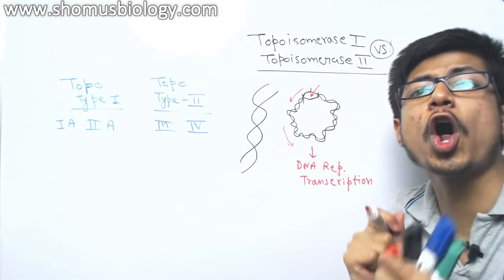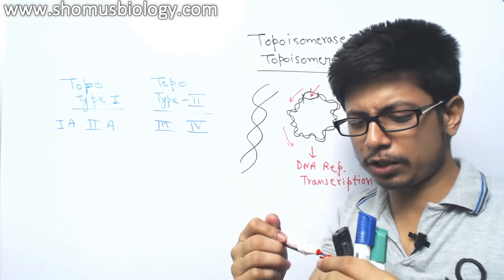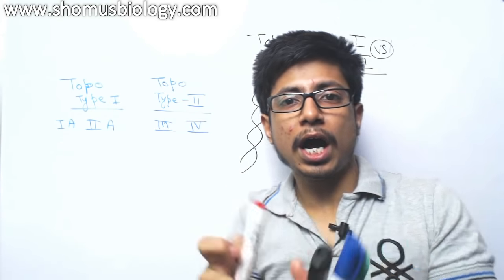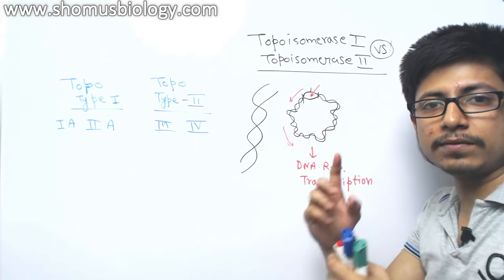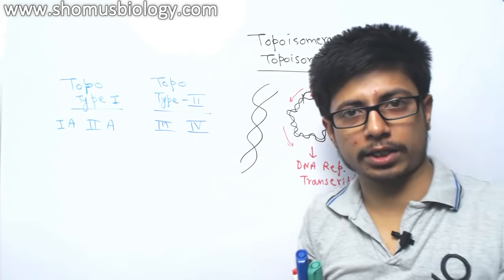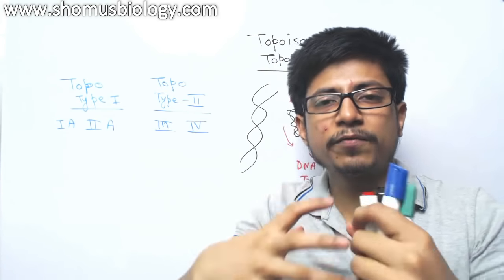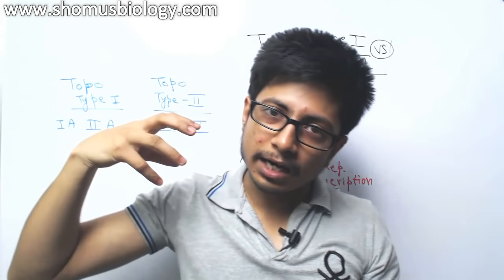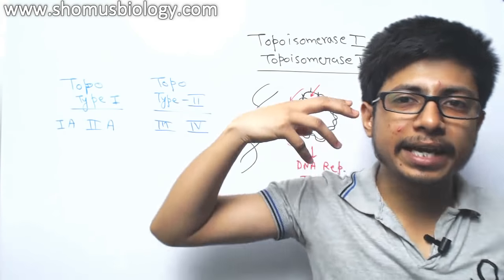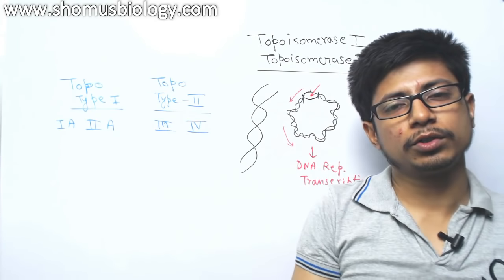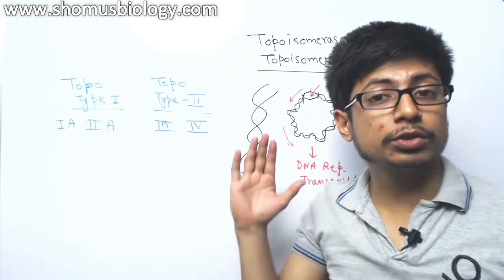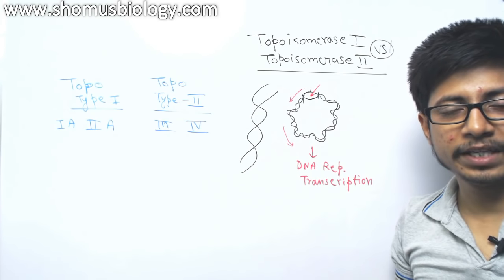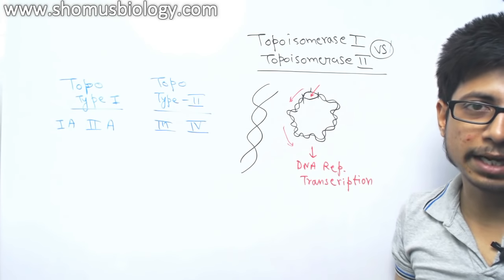The DNA is going to form knots — the strands will be so strained they rewind among themselves and form knots. DNA polymerase cannot move through those knots, so DNA replication will be halted and cannot be carried out.